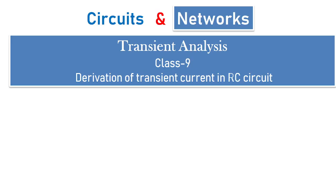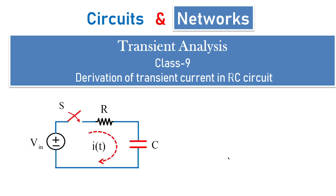Hi, welcome to another session of circuits and networks. In today's transient analysis class 9, we are going to see the basic derivation involved in order to obtain the transient current in RC circuit. Here we are going to see how to obtain the voltage across resistance and how to obtain the voltage across capacitance when transient current is flowing into the circuit.